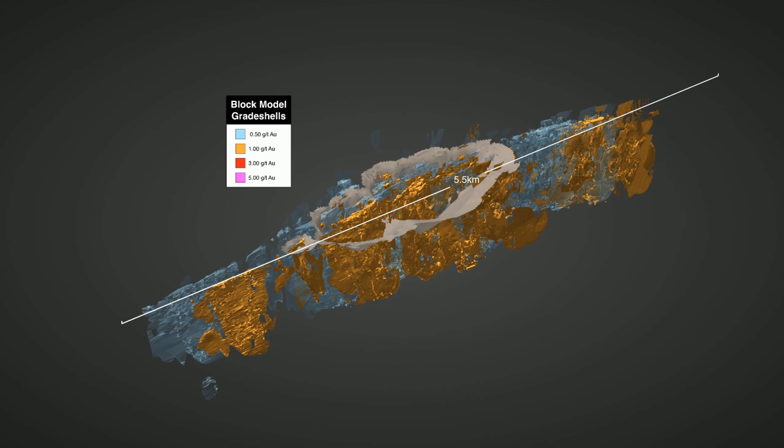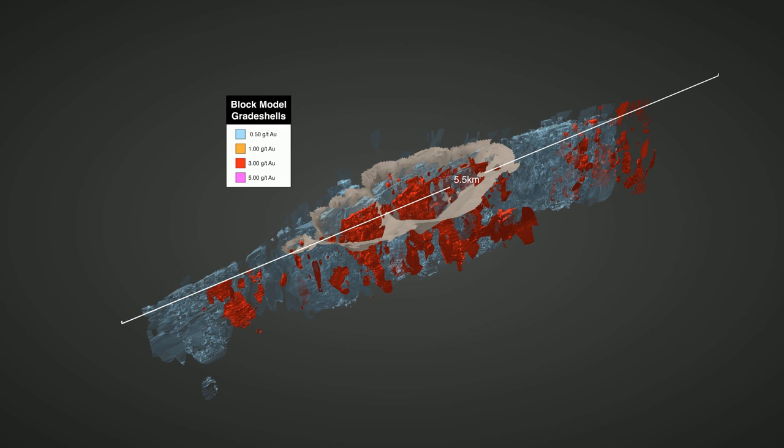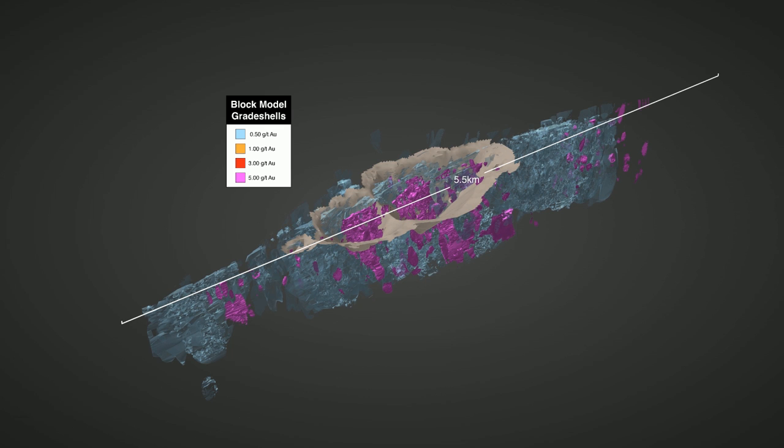There is a subset of the resource that holds together well at higher cutoff grades including 3 million ounces at 3.5 grams per tonne in the open pit and 1.1 million ounces at 6 grams per tonne in the underground, and the initial resource is just the beginning.